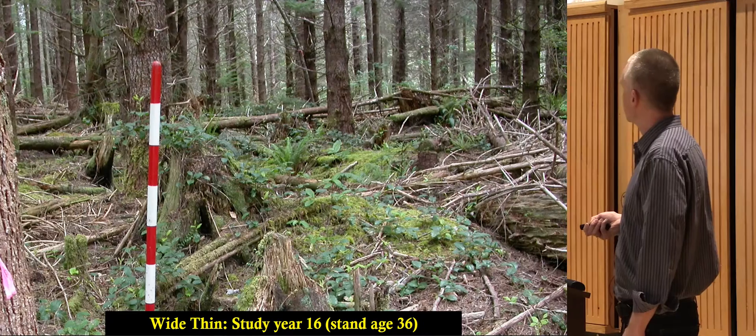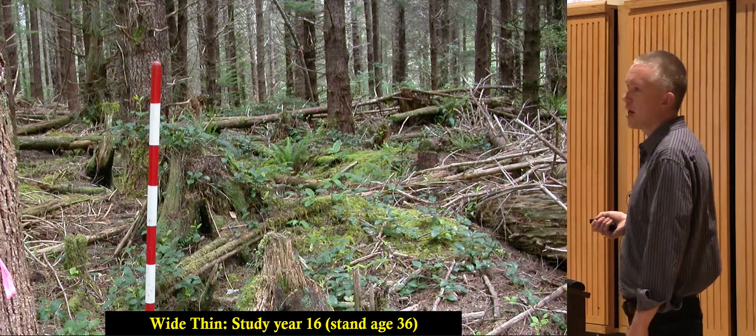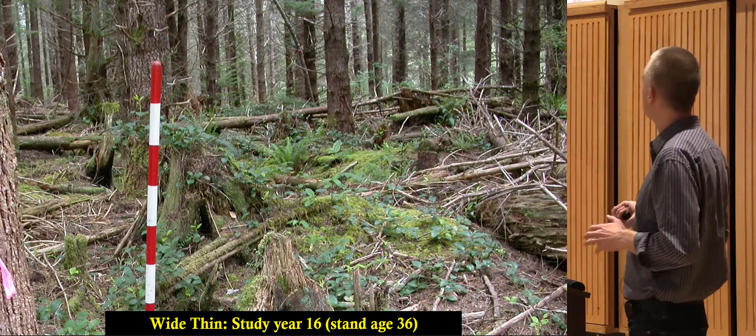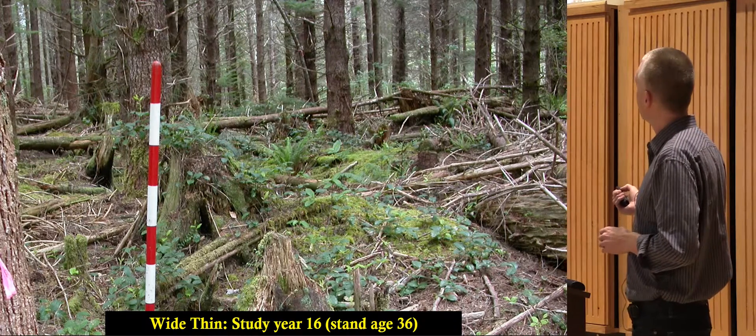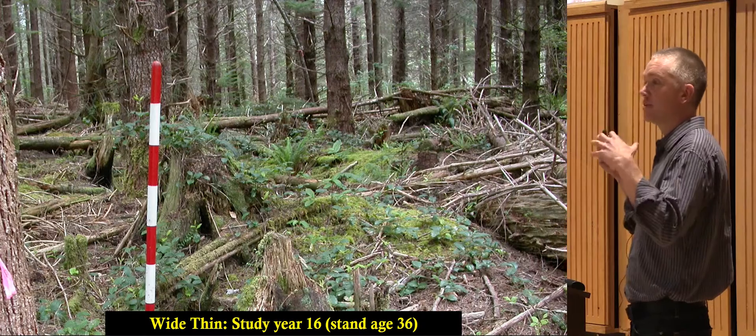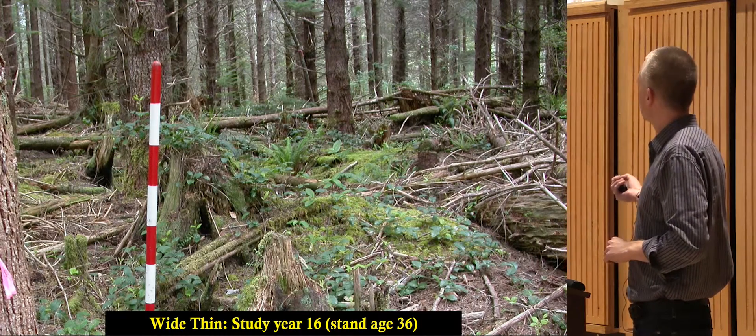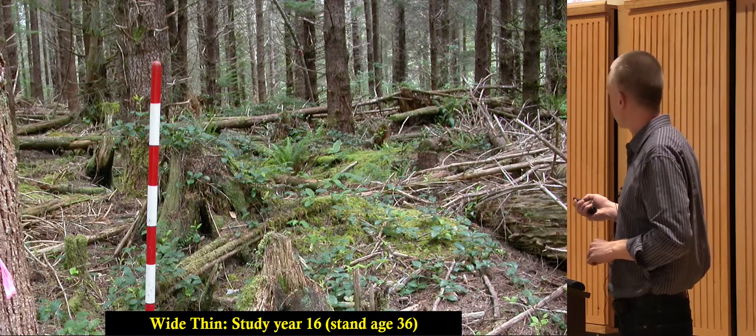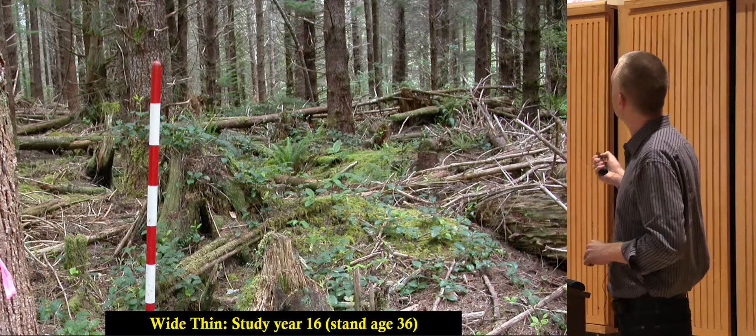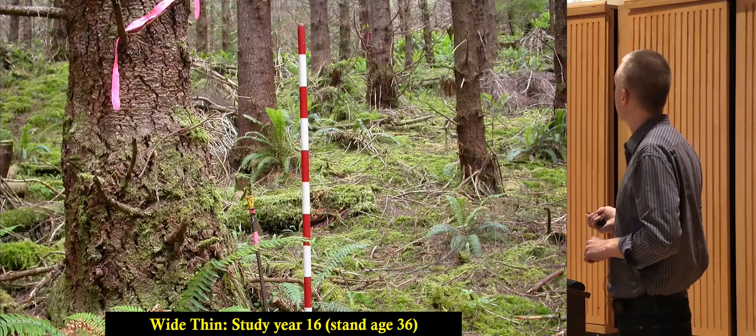Now moving on to some of these alternative pre-commercial thinning treatments. This is our wide thin where we went down to 200 trees per acre. After 16 years, you can see even though these trees have been filling in the canopy, there's still enough light reaching the understory to sustain at least a little bit of understory vegetation 16 years later.